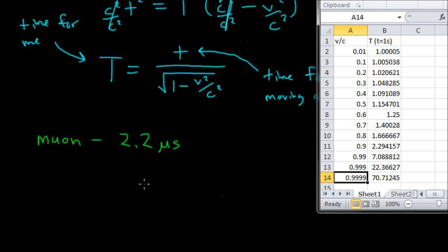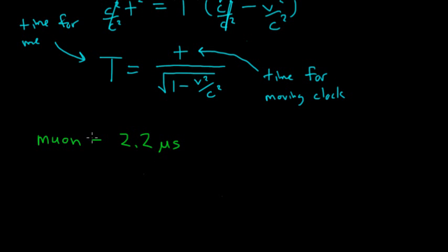And, they've done these tests with muons created in laboratories, muons created in when cosmic rays hit the upper atmosphere. But, this has been tested and verified to within experimental accuracy, that special relativity is right. Clocks actually run slower.